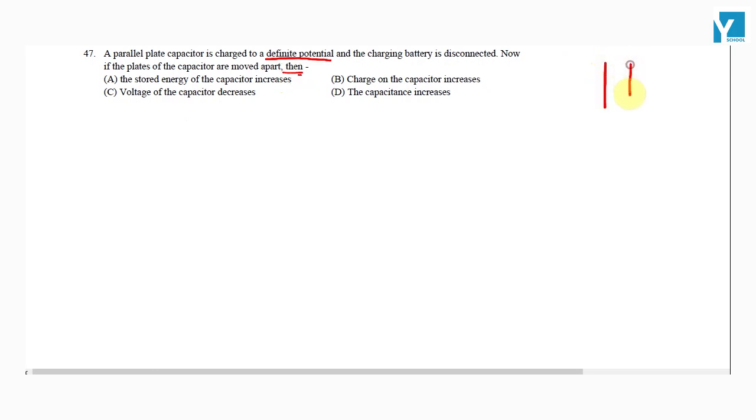So this is a parallel plate capacitor charged to a potential difference of V volts through a battery, and then the battery is disconnected.